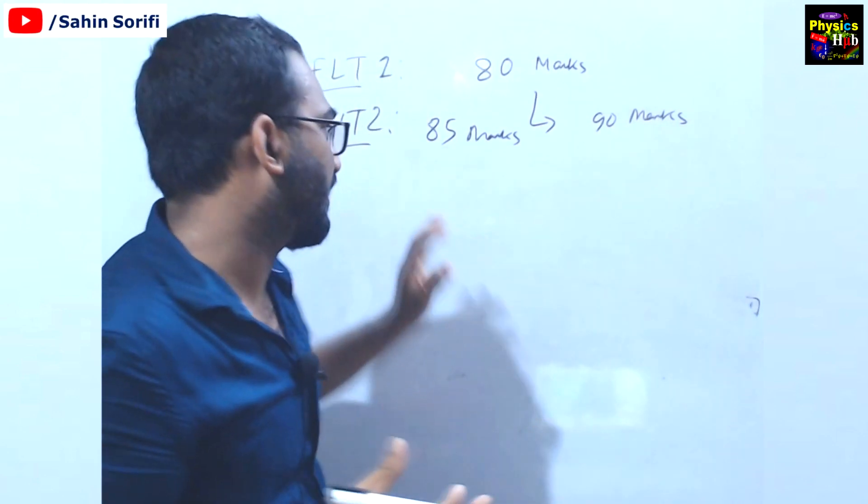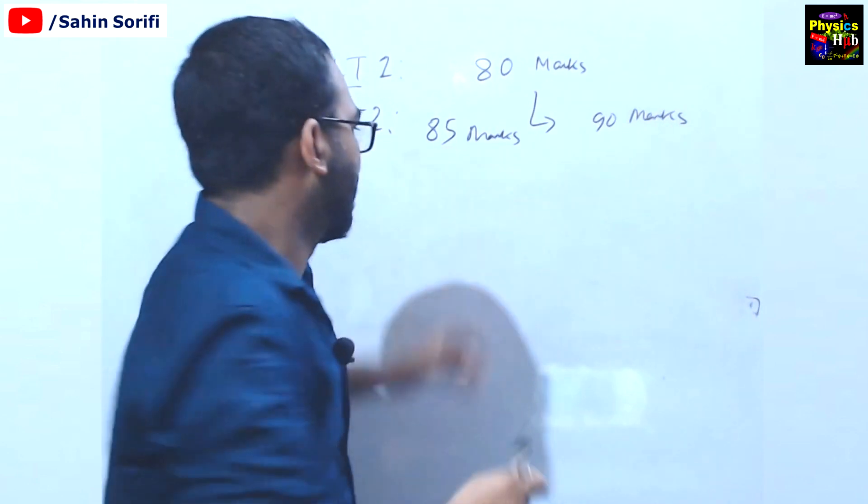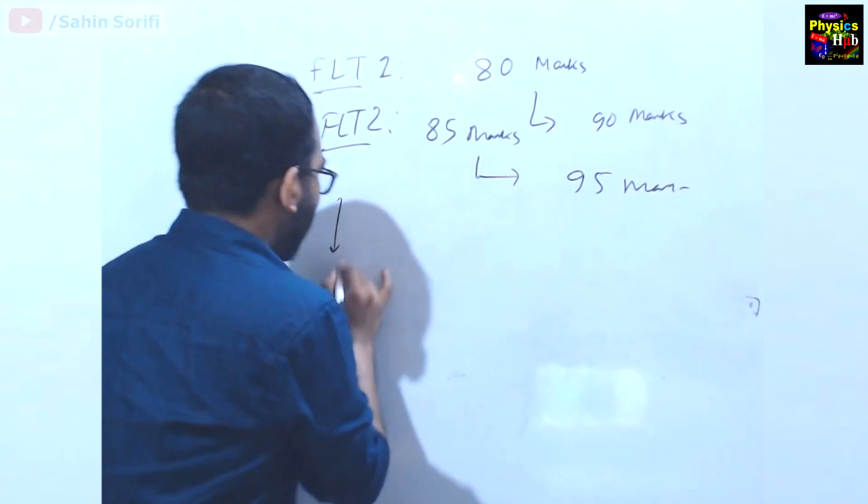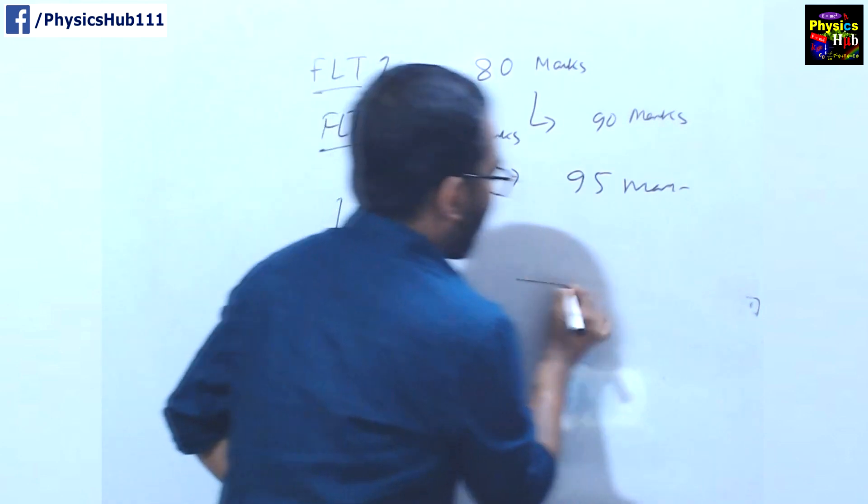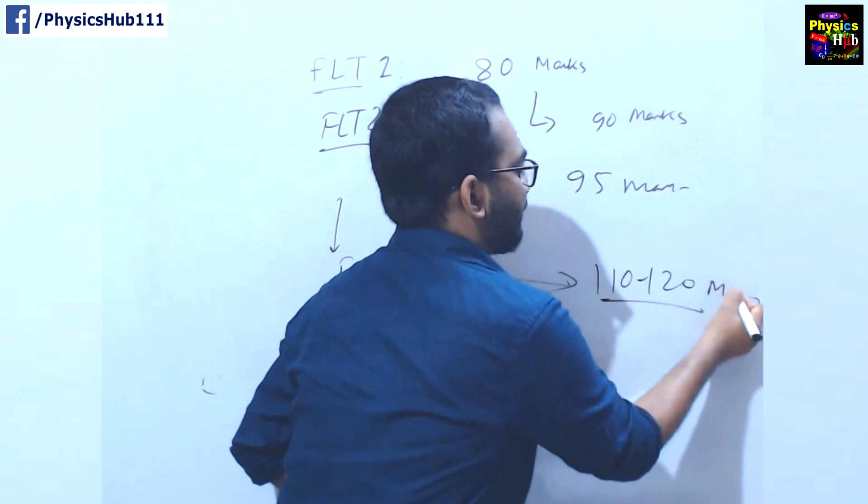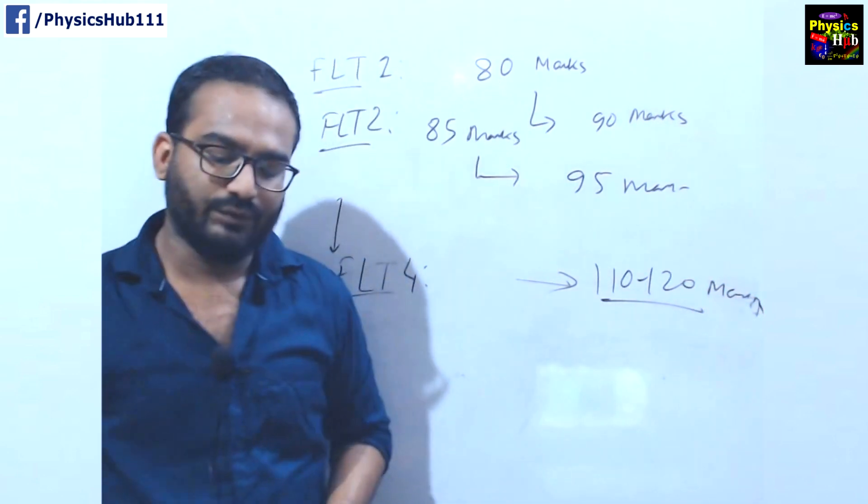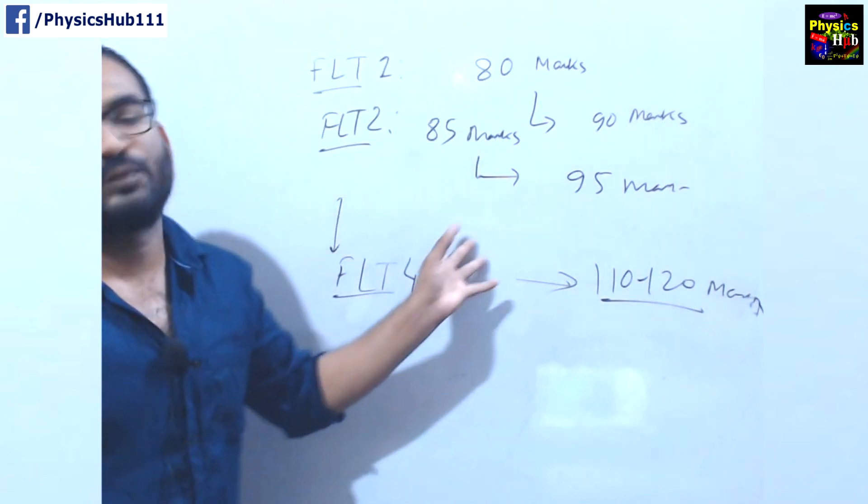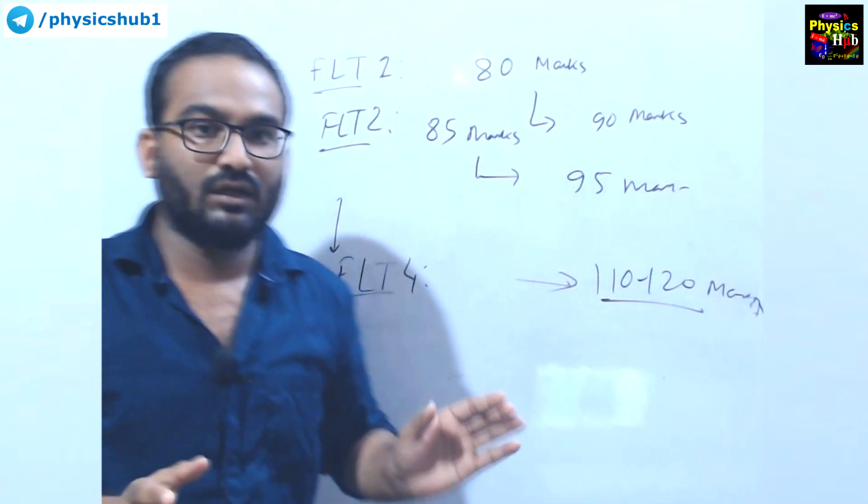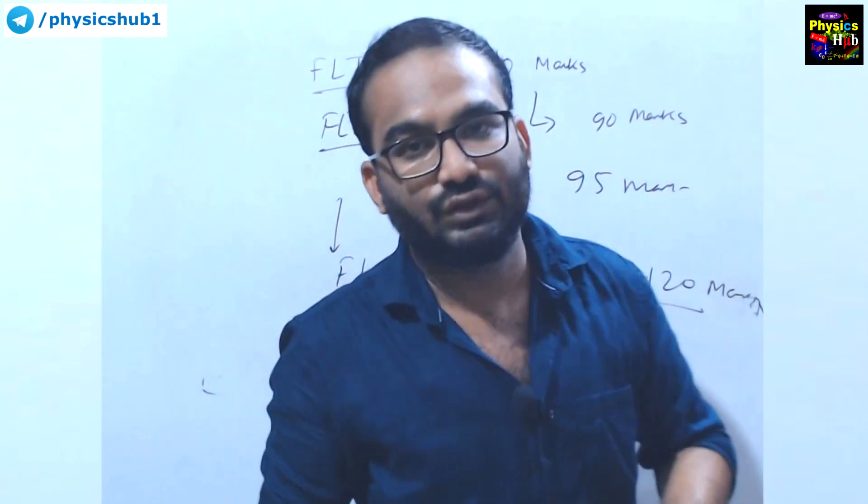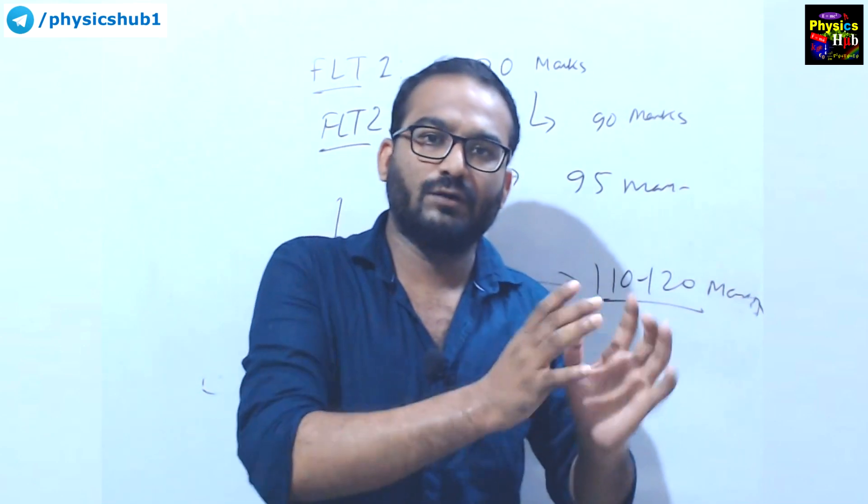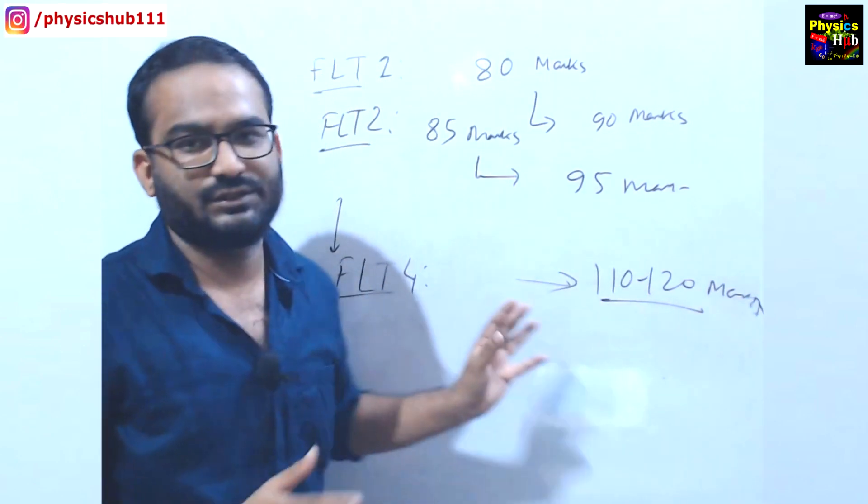Let's say you have scored 85 marks. Now, you can target for 95 marks. In this way, till full length test four, you have to target for around 110 to 120 marks. Now, I know it may not be possible for you, but you have to try. You can at least give it a try. That's why I have kept eight days. One extra day just to strengthen your weak areas. You are getting a whole day to strengthen your weak areas. If you have prepared well throughout the year, I hope this strategy will help you a lot.